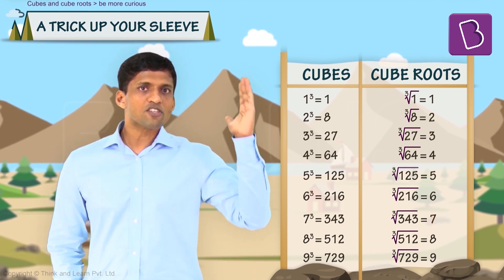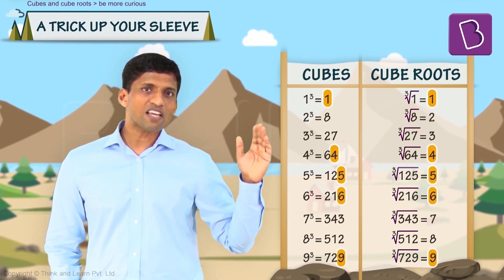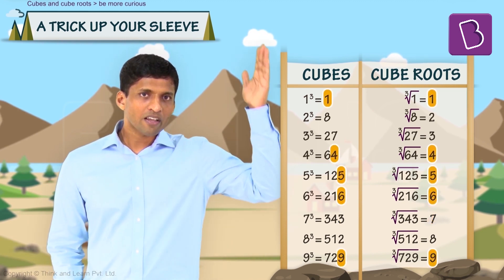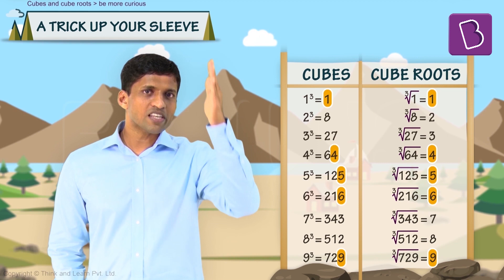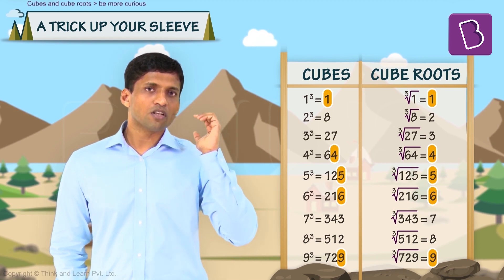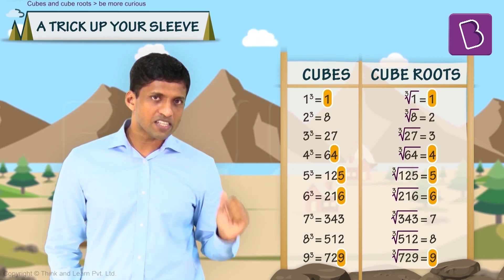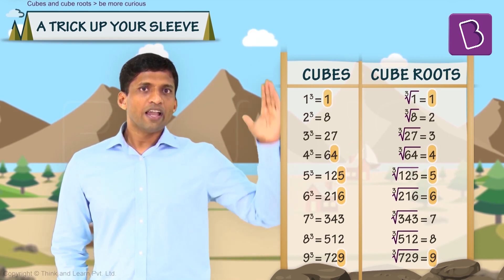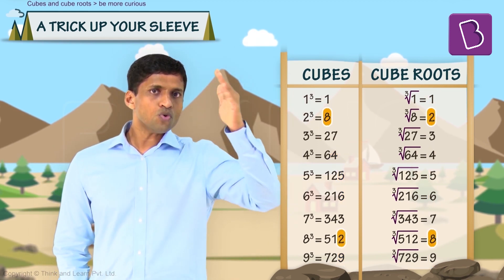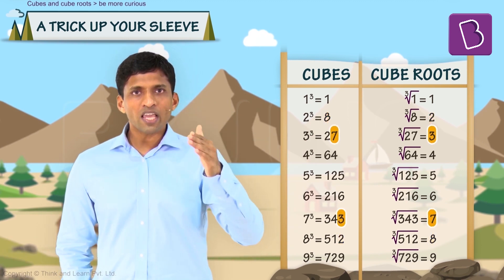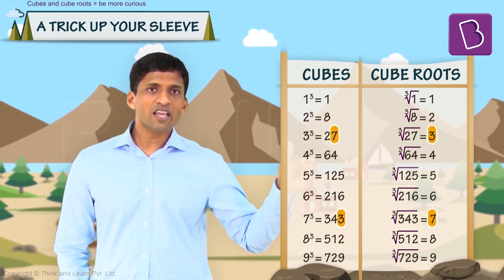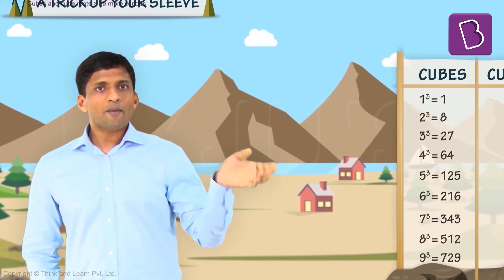So the pattern is: 1, 4, 5, 6, 9 — the cube root also has the same unit digit. 8 maps to 2 and 2 maps to 8. 7 maps to 3 and 3 maps to 7.